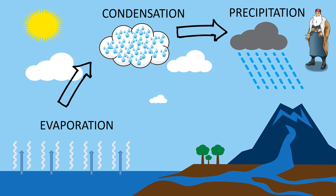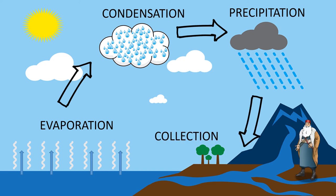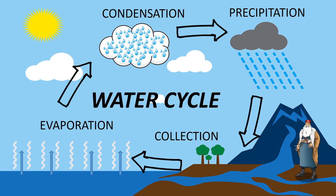And the last step — collection: water is collected in the sea, rivers, water springs, and lakes. And this process starts all over again: evaporation, condensation, precipitation, and collection. Now I understand the water cycle!